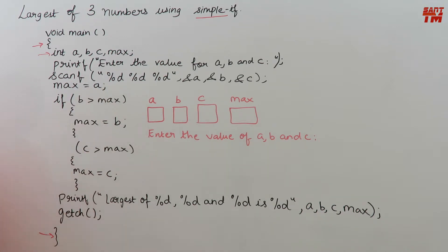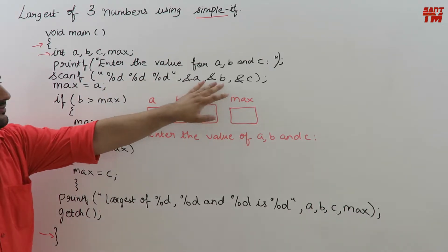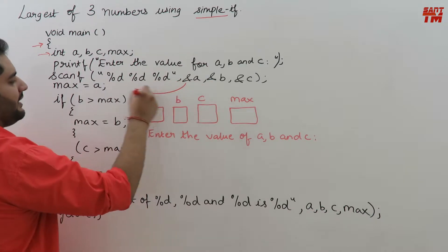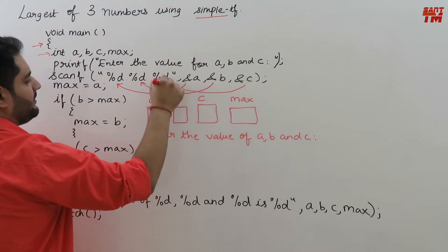Then printf enter the value for a, b and c. Like this enter the value of a, b and c will be printed directly on your console output black screen. Then scanf %d, %d, %d, address of a, address of b, address of c. That means whatever we will enter it will be stored at the addresses of a, b and c respectively.